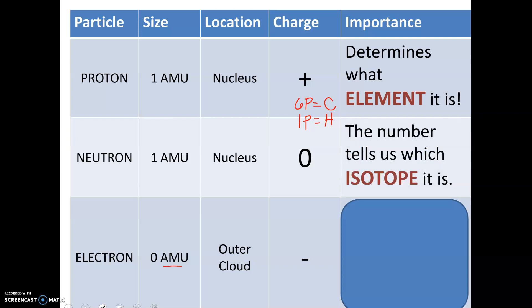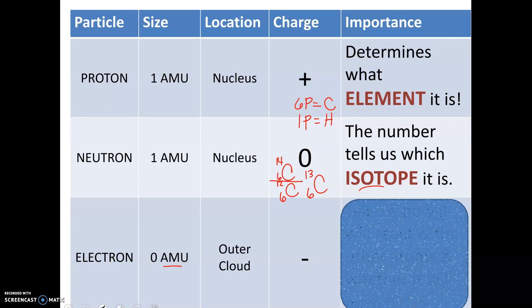Neutrons, which is also in the nucleus, will tell us what isotope it is, and we're going to talk about this in a moment. But you can have the same element, for example carbon, with different numbers of neutrons. There's carbon-14, carbon-12, and carbon-13. They all have 6 protons, but they have different numbers of neutrons. So the neutrons can be changed, and those are called isotopes.